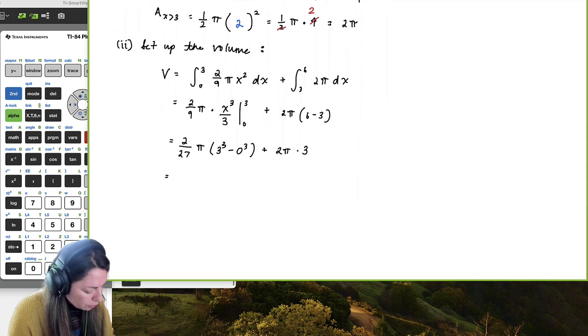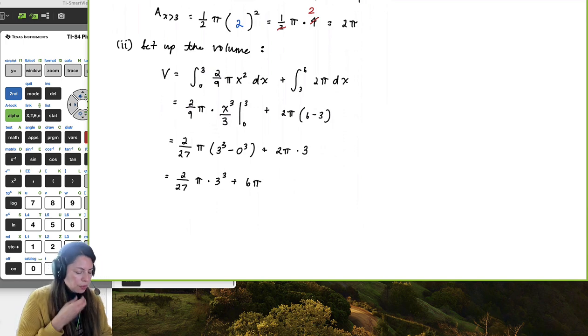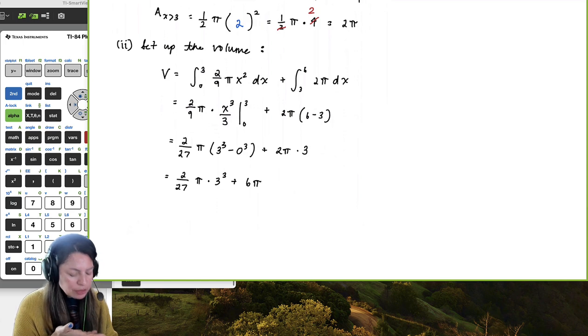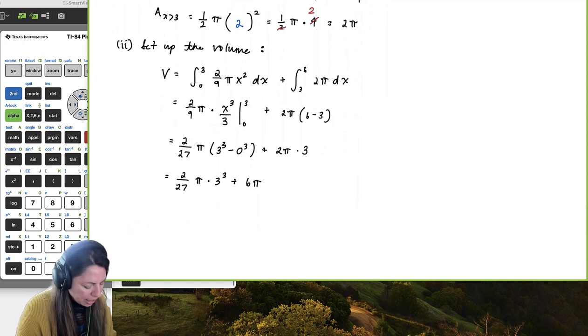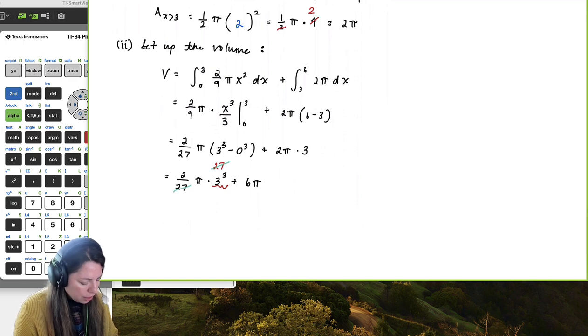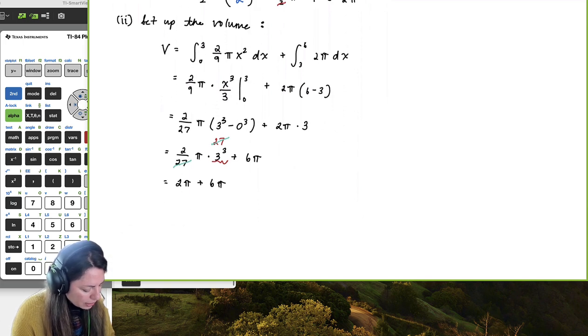So at this point, we're going to get two over twenty-seven pi times three cubed, and then plus six pi. Okay, well, right away, I don't even have to bring out my calculator, which I usually do, but I can see right away that three cubed is twenty-seven, and the twenty-seven is going to reduce out from that, to that denominator. So we actually end up getting just two pi plus six pi. And that's going to be eight pi, and then cubic units.